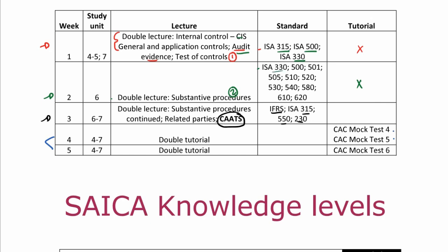ISA 330, which we've already done because that's your responding to risks. So your plan is going to say you need to do substantive procedures — now you're going to physically do the procedures that you feel are appropriate according to your audit plan. We're doing ISA 500, 501, 505, 510, 520, 530, 540, 580, 610, and 620.